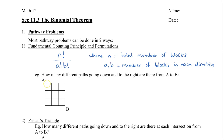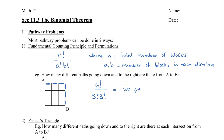So in this example, we have 3 blocks to the right and 3 blocks going down, so there are a total of 6 line segments to get from A to B. That gives us 6 factorial divided by 3 factorial times 3 factorial, and we get a total of 20 paths.